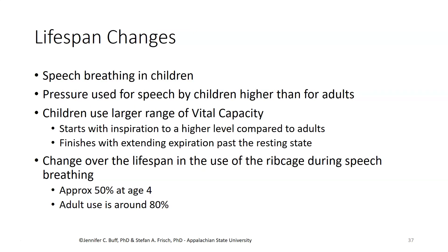There are changes in speech breathing patterns over the lifespan. For children, the pressure used for speech is generally higher than it is for adults, and children use a larger range of their vital capacity. Children start with inspiration to a higher level compared to adults, and also finish with extension of expiration past the resting state. There is also a change over the lifespan in the use of the ribcage during speech. Young children use the ribcage about 50-50 with the abdominal muscles, whereas adult use is around 80%, reflecting increasing proficiency and control of respiration for speech.